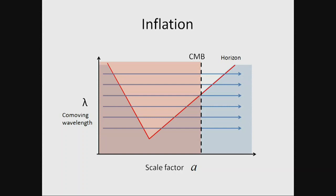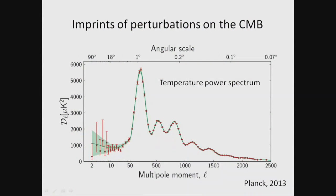Some of these Fourier modes are beyond the horizon, some are already inside the horizon and have been processed by ordinary classical physics. This is an actual measurement made by the Planck experiment (ESA) — the temperature power spectrum plotted against theory. This must be one of the most successful physics experiments out there that verifies a theory: the spectrum looks exactly like the theory predicted.